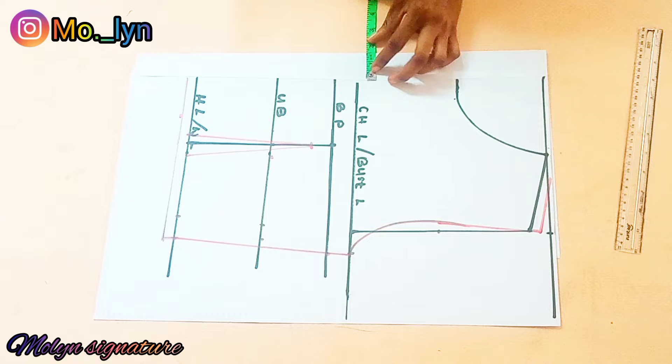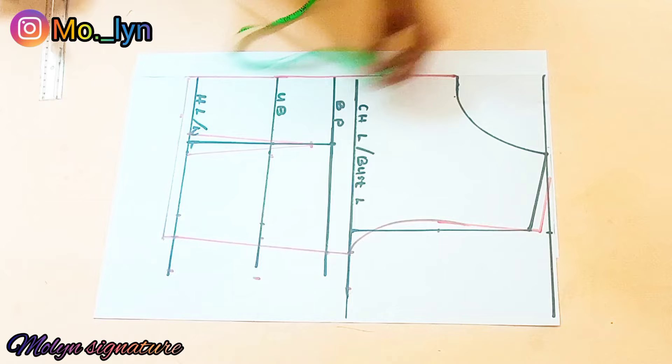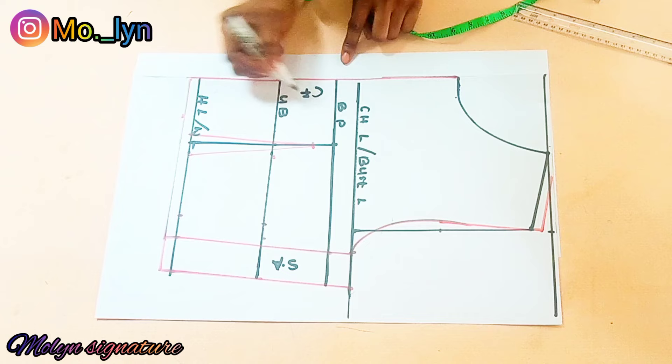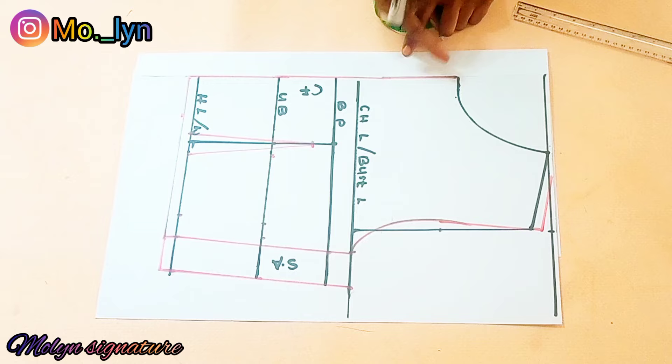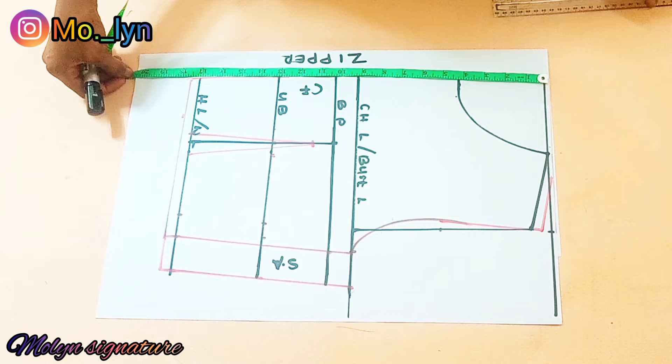I added 1.5 inches for the stitching allowance and connected that into a straight line. That's my stitching allowance, so this is going to be my center front. I also added 1.5 inches for the zipper allowance. I'll extend the lines upwards to draft out the neckline — for my neckline I'll go down by one inch at this part, though you can choose any desired neckline. From there, after drawing the line...